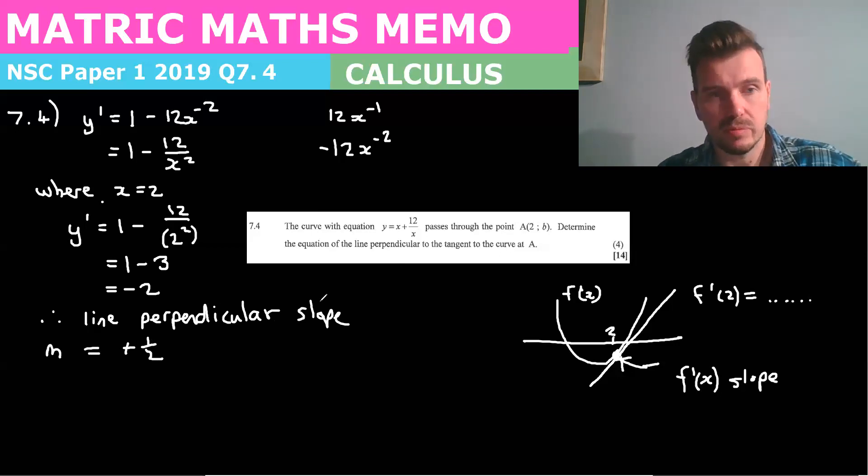And now we know that the general formula for a line is y = mx + c. So we know m, but we need to find c. Well, all we need is another point on the graph. So how do we get that other point?